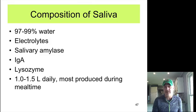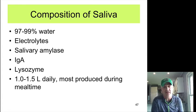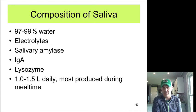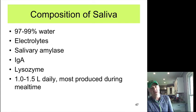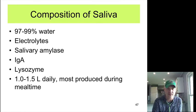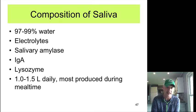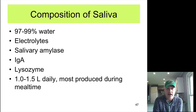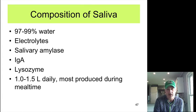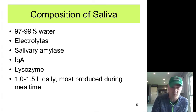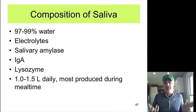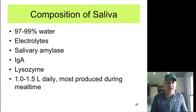Saliva is mainly water — 97 to 99% — with a few electrolytes mixed in. There is one key enzyme, salivary amylase, that starts the chemical digestion of starches by breaking them down into simpler sugars. Saliva also contains IgA antibodies and antimicrobial substances like lysozyme that can help destroy bacteria. On any particular day you make about a liter to a liter and a half of saliva, mostly while eating — which is almost a three-quarters-full two-liter jug of saliva per day.